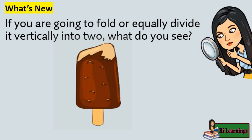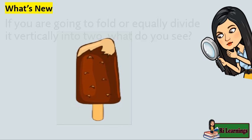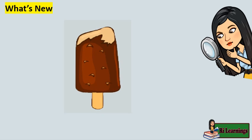In the picture is a popsicle. If you are going to fold or equally divide it vertically into two, what do you see? If we were to draw an imaginary line in the middle of it, we could not divide it into two equal parts like this.